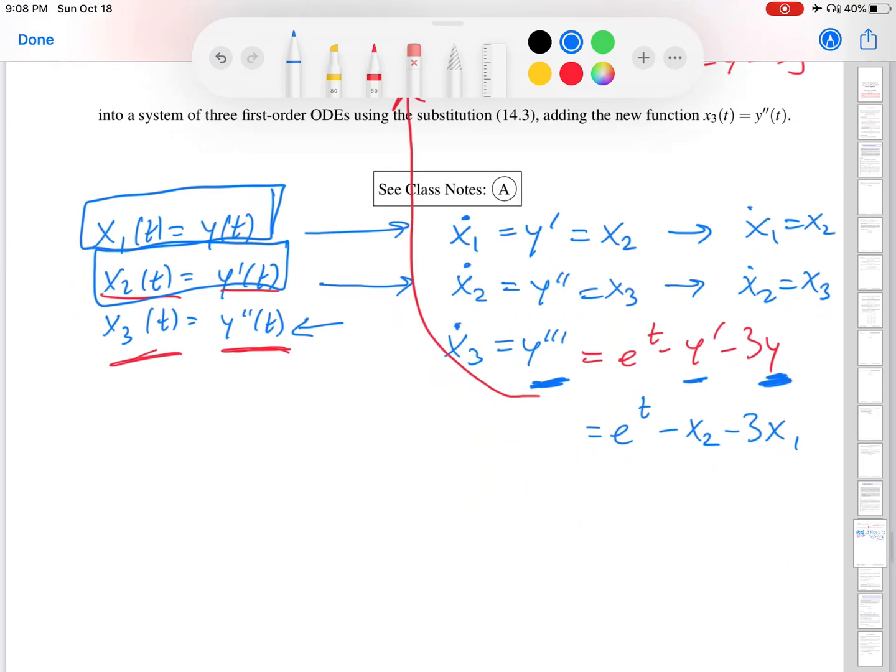Great. So to wrap up, what's my system? x1 dot equals x2, x2 dot equals x3, and x3 dot equals e to the t minus x2 minus 3x1.